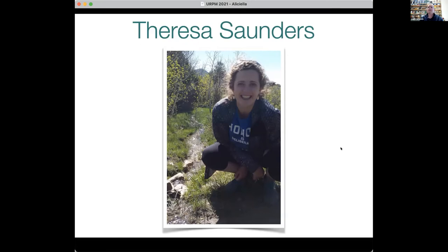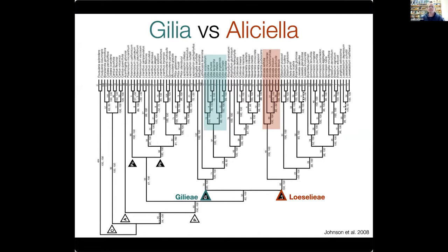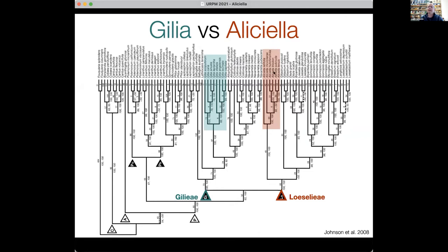I've presented some preliminary Aliceella data before, but because the species in the genus Aliceella appear in the Utah Flora under the genus Gilia, I always like to do a brief taxonomic lecture to clarify the differences between these two genera. Within Polemoniaceae, Gilia resides in tribe Gilieae, sister to Allophyllum, Colmia, and Navarretia, whereas Aliceella belongs in tribe Loeselieae, closely related to Eriastrum, Ipomopsis, Loeseliastrum, and other species.